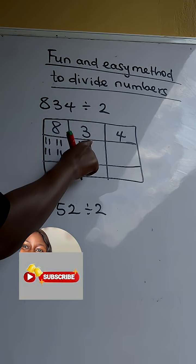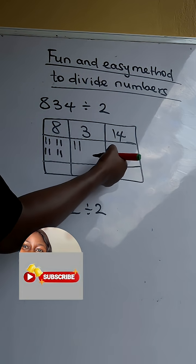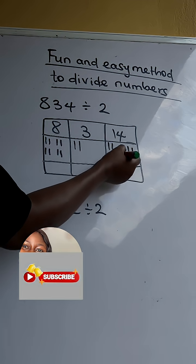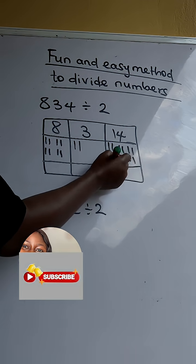Now this 1, we will add it here. This will be 14. So for here we will have 1, 2, 3, 4, 5, 6, 7, 8, 9, 10, 11, 12, 13, 14.